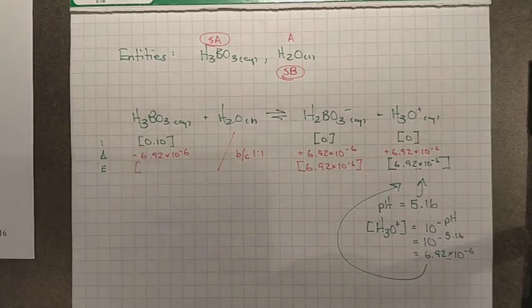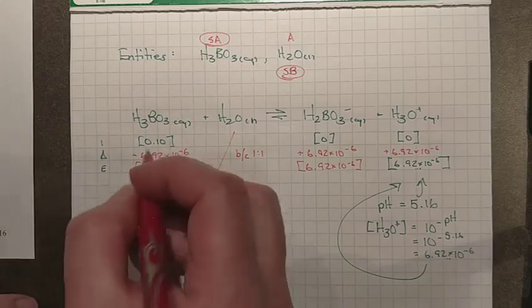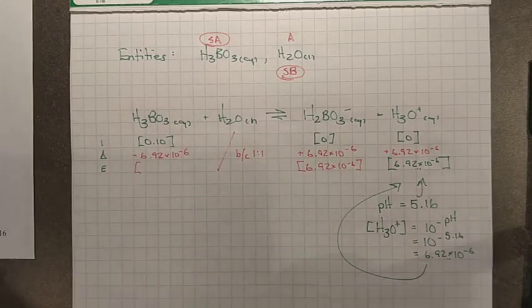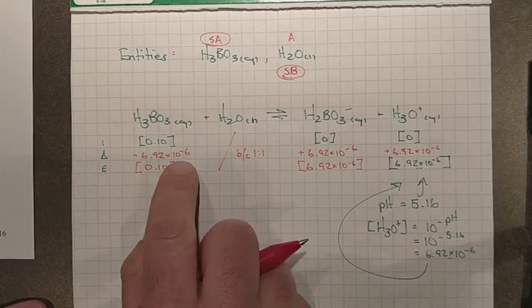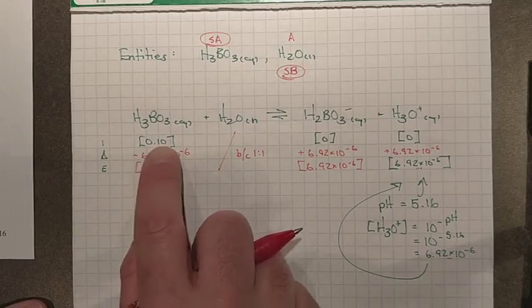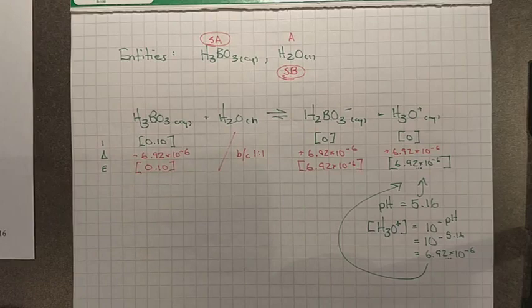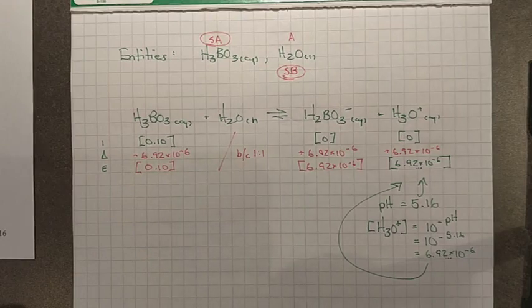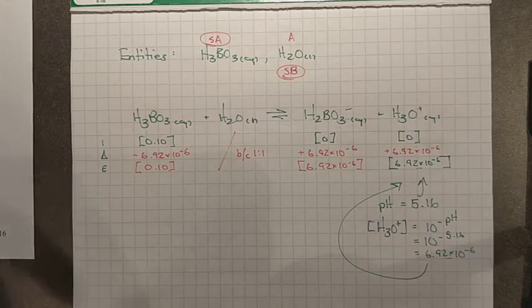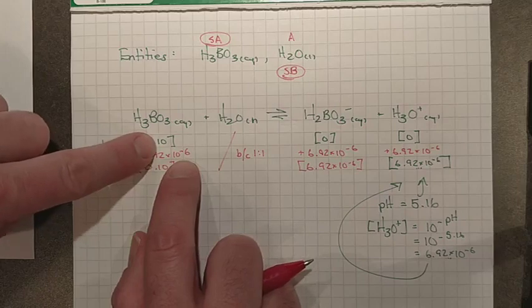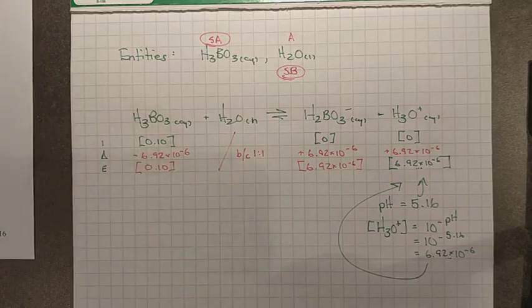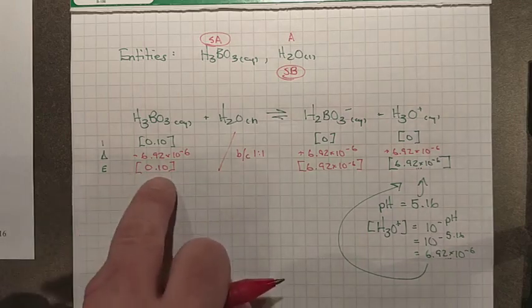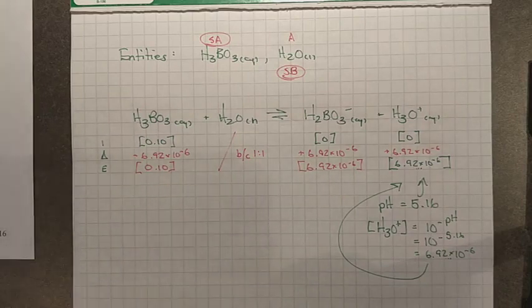Now when you do this one here, 0.10 minus 6.92 times 10 to the negative 6 is like 0.0999999999 which is essentially 0.10. If the change is on an order of magnitude of a 1000 times smaller than your original concentration, oftentimes what we'll do in a lot of these problems is we'll just ignore that change. Because how different is 0.0999999 to 0.10? And it's pretty much insignificantly different. Or if you look at it there's an order of magnitude here when we take negative 1 and negative 6 of about this being one ten thousandth of the original concentration. So that's the reason I'm writing 0.10. If you didn't like that and wrote the 0.99999999 value you're gonna get the same answer in the end.